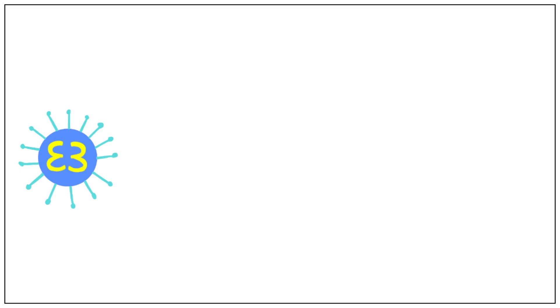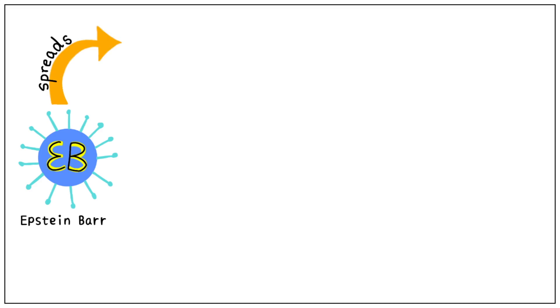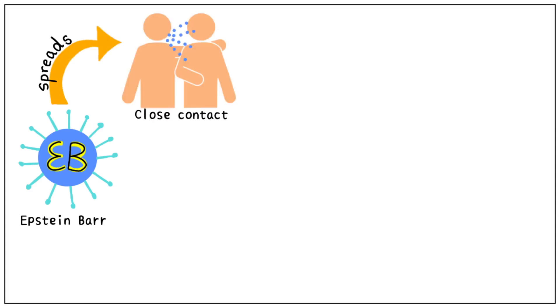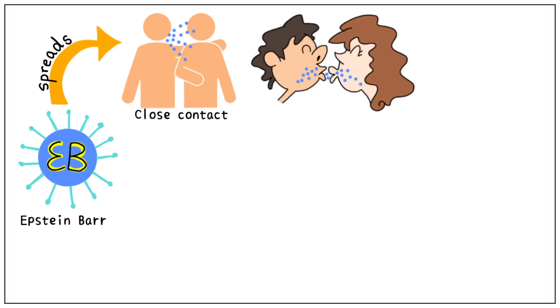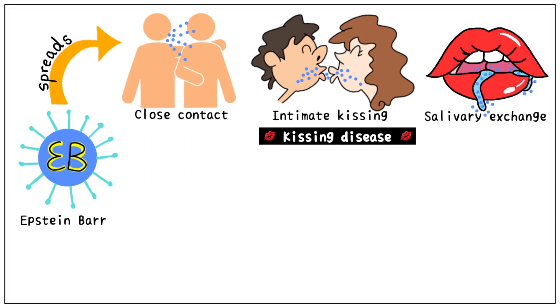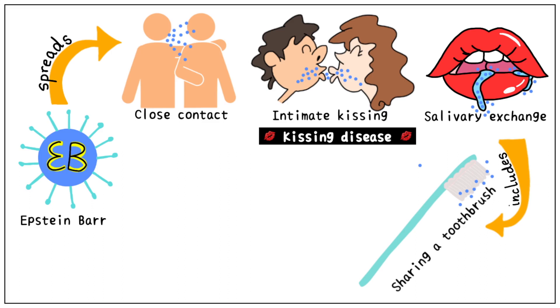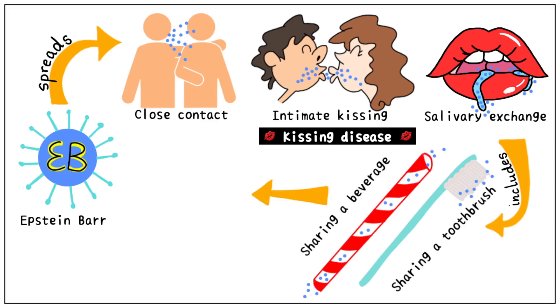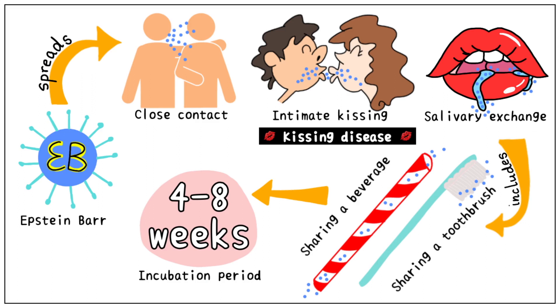This disease is caused by a virus called EB, or the Epstein-Barr virus, belonging to the herpes family. The infection spreads through close personal contact. The leading cause of infection is intimate kissing, which is why it's been called kissing disease. Any form of salivary exchange with an infected individual can spread the disease, including sharing a toothbrush or a beverage. After four to eight weeks of incubation, the virus successfully causes the disease in our bodies.